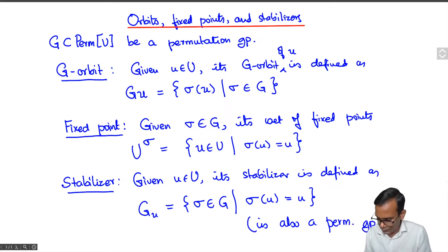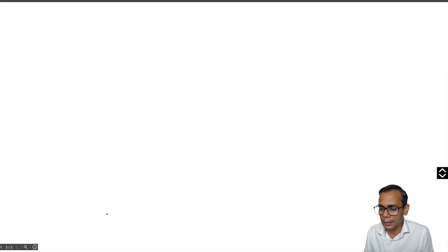Namely if sigma and tau both take U to U then of course the composition of sigma and tau will take U to U and if sigma takes U to U then sigma inverse will also take U to U. So these are the three basic definitions related to permutation groups and now let me just state a very fundamental counting result that relates these things and this is called the orbit stabilizer theorem.